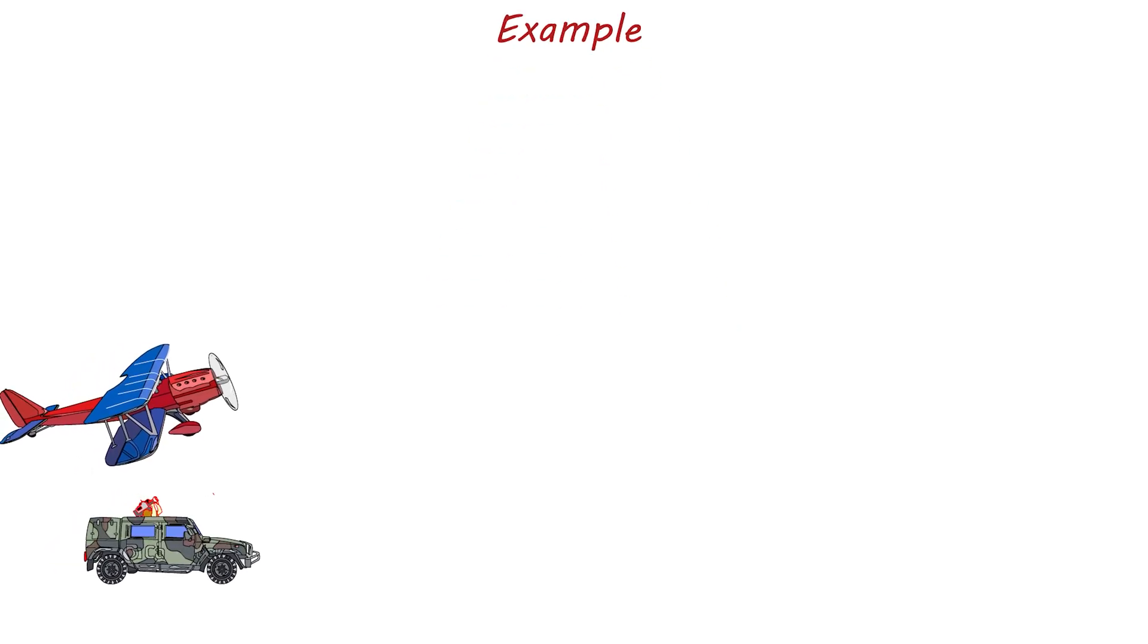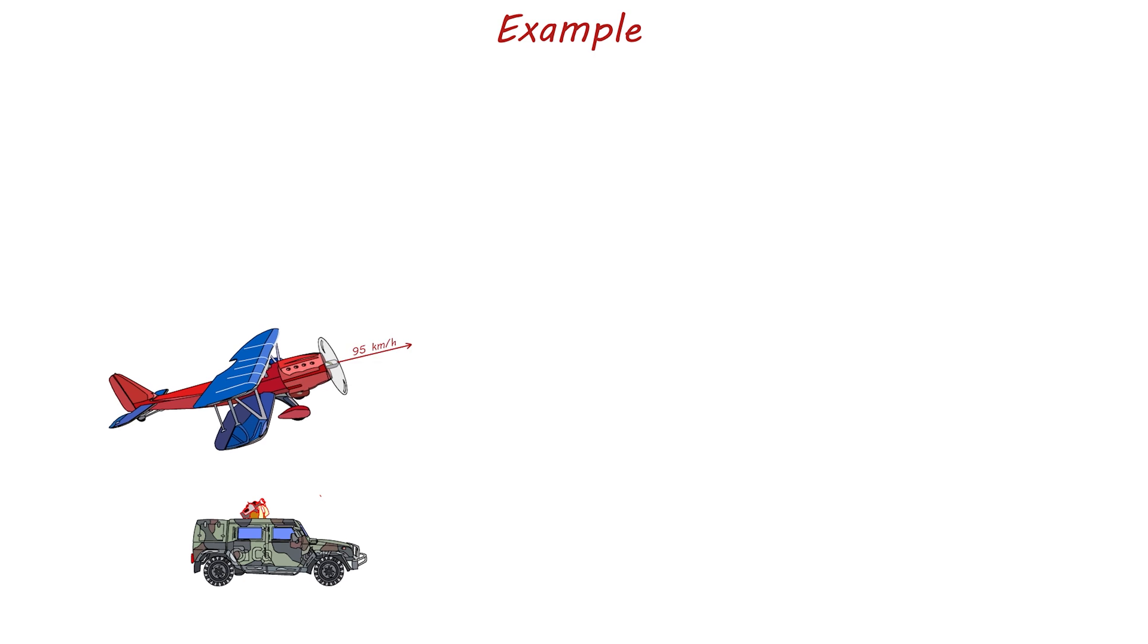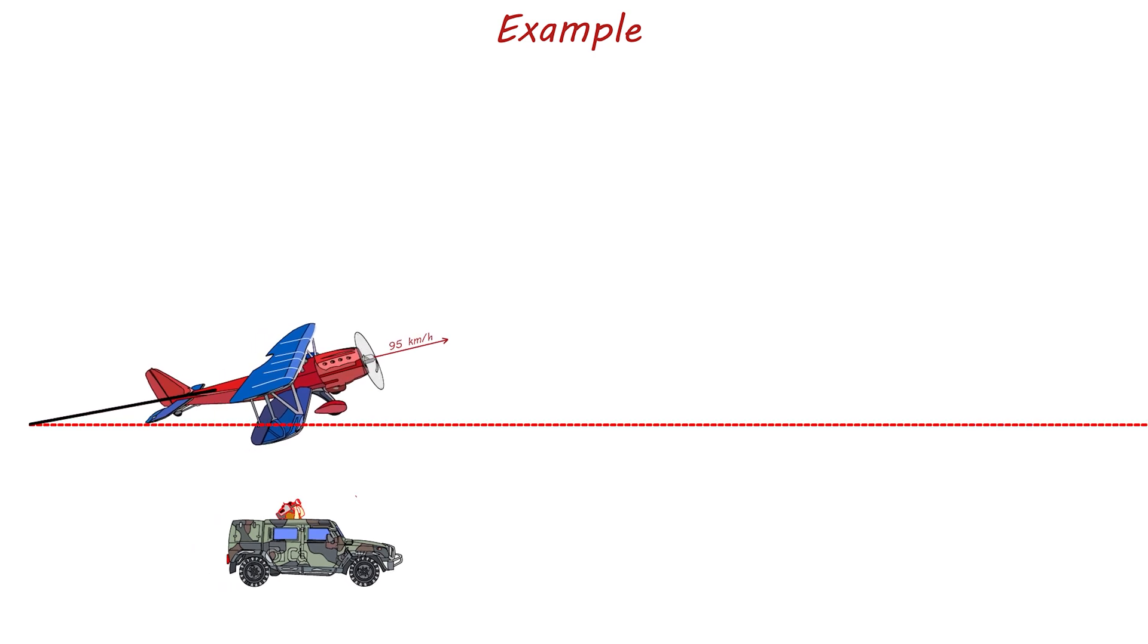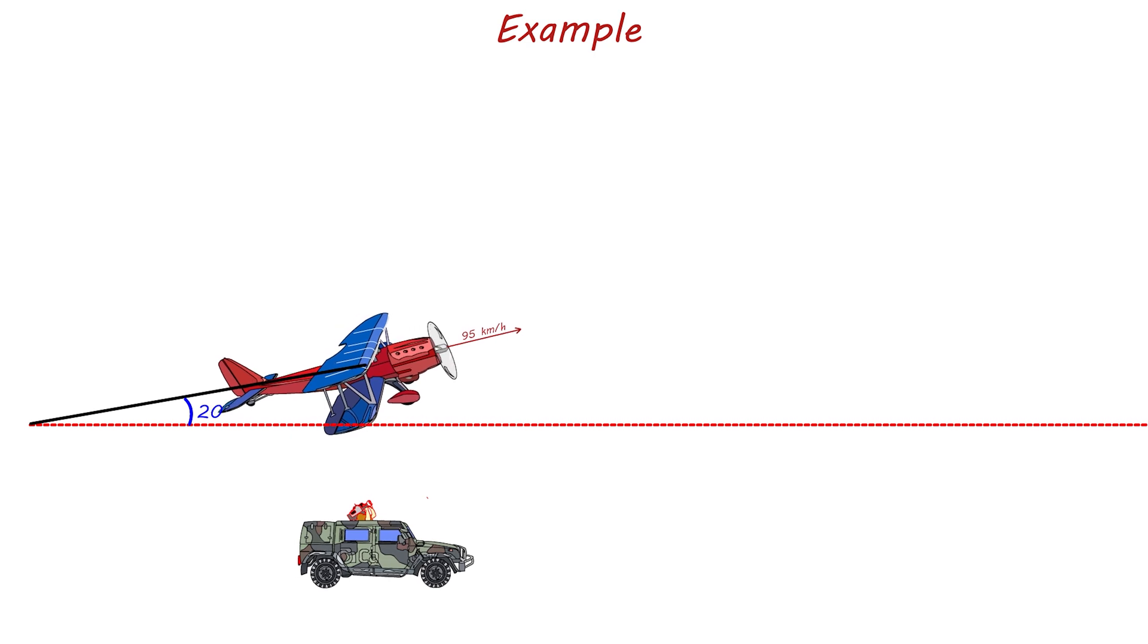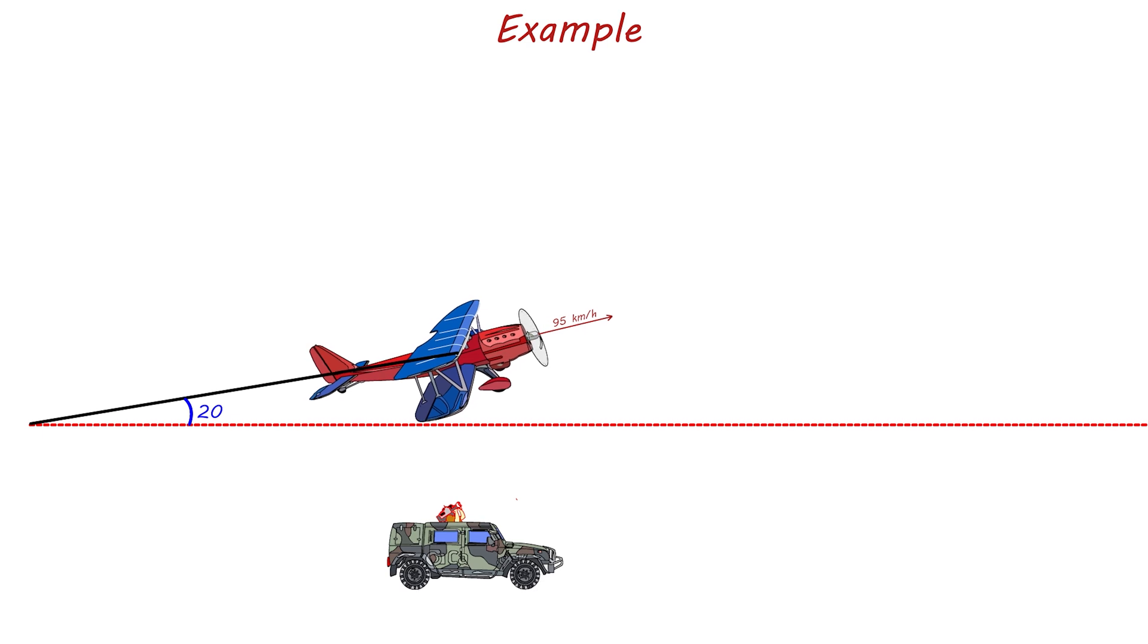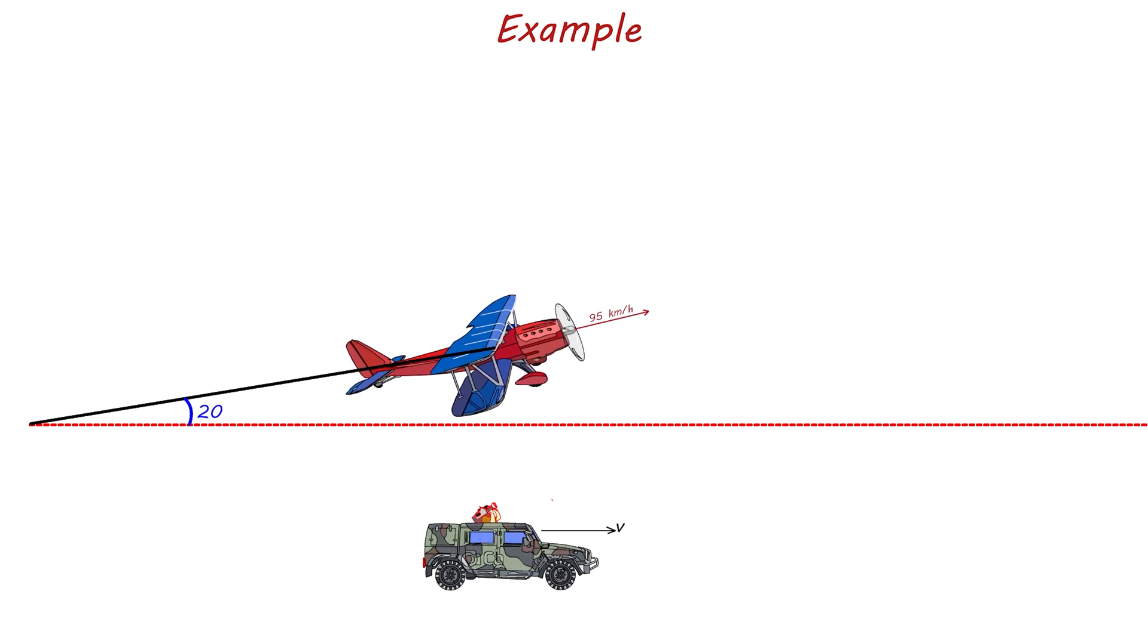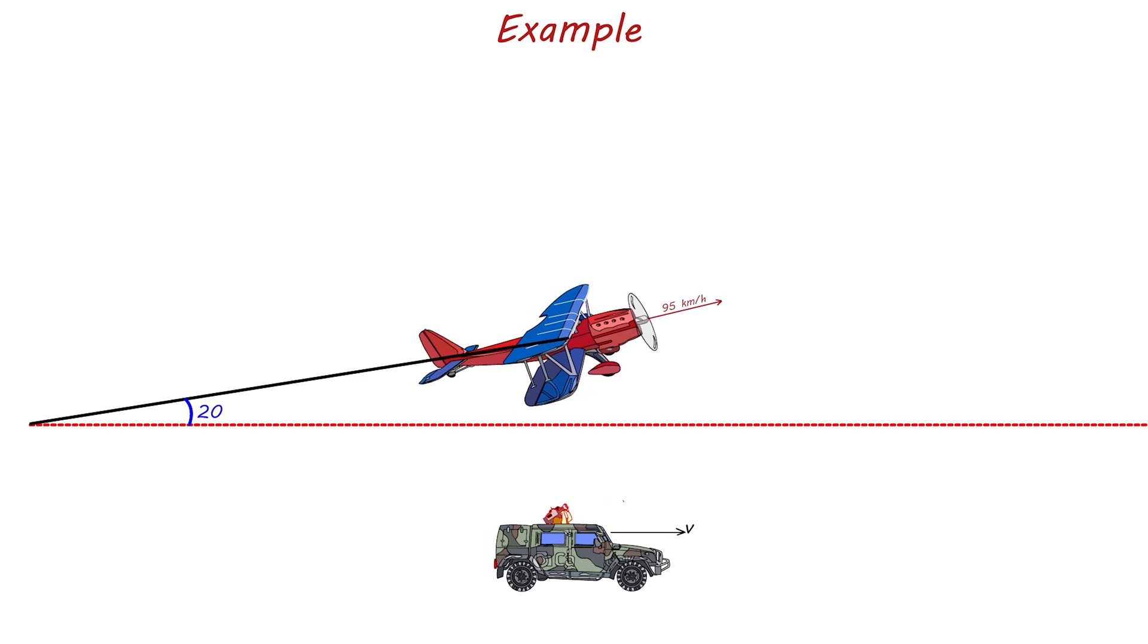Example. Resolving a vector allows you to analyze the motion in each direction. This point is illustrated by examining a scene on the set of an action movie. For this scene, a plane travels at 95 kilometers per hour at an angle of 20 degrees relative to the ground. Filming the plane from below, a camera team travels in a truck directly beneath the plane at all times. To find the velocity that the truck must maintain to stay beneath the plane, we must know the horizontal component of the plane's velocity.